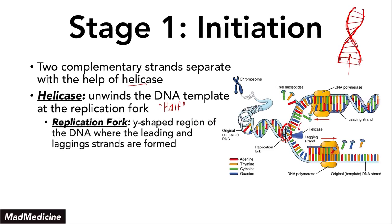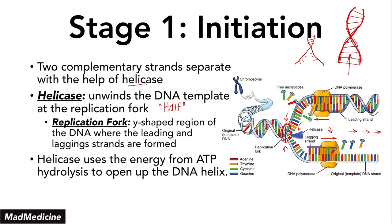The replication fork is a Y-shaped region of the DNA where the leading strand — the continuously replicating strand — and the lagging strand, which goes in the opposite direction and is discontinuous, are being replicated. Helicase uses ATP hydrolysis to open up the DNA helix. This is a very taxing process requiring significant energy.